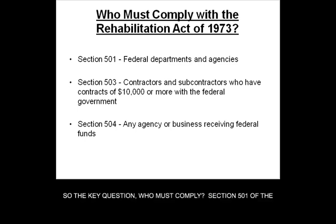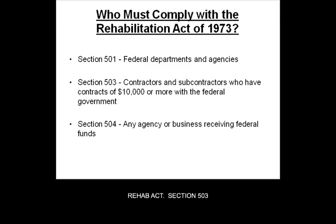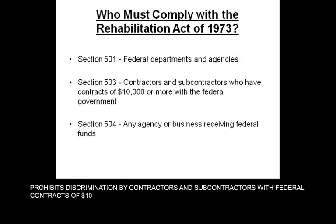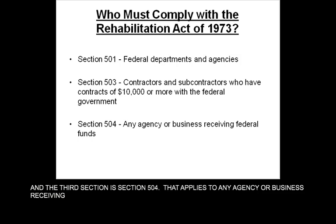Section 501 of the Rehab Act pertains to federal departments and agencies — if someone is an applicant or employee of a federal department or agency, direct them to Section 501. Section 503 prohibits discrimination by contractors and subcontractors with federal contracts of $10,000 or more. Similar to the covered entities question earlier, if the contract is for less than $10,000, Section 503 will not provide protection. Section 504 applies to any agency or business receiving federal funds.